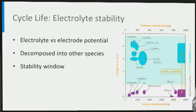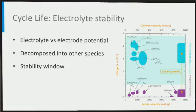Looking at graphite, its potential is below that of existing electrolytes. Therefore, the graphite negative electrode will reduce the electrolyte. Nevertheless, graphite is the most applied negative electrode in lithium-ion batteries. How does this work? Depending on the electrolyte, its reduction leads to a solid electrolyte decomposition product on top of the graphite surface. This film is known as the solid electrolyte interface, the SEI.